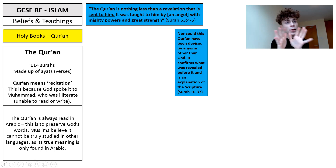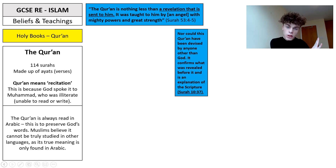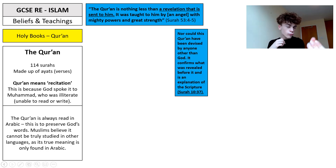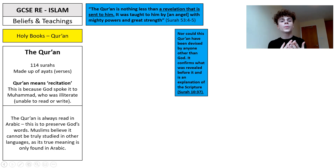Surah 53 says about itself: 'The Quran is nothing less than a revelation that is sent to him. It was taught to him by an angel with mighty powers and great strength.' This encapsulates the key ideas: the Quran is a revelation recited by the illiterate Muhammad, sent directly from God, taught by the angel Jibril. Surah 10 adds: 'Nor could this Quran have been devised by anyone other than God. It confirms what was revealed before it and is an explanation of the scripture' — linking with earlier holy books such as the Gospels and the Torah.